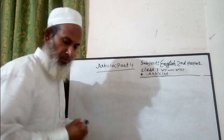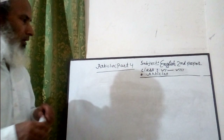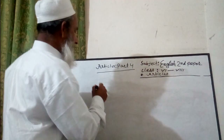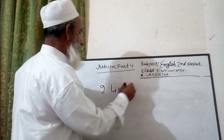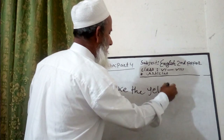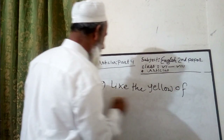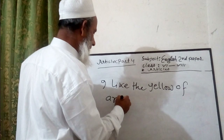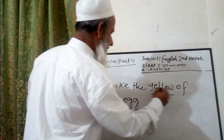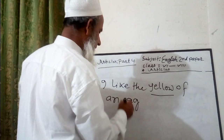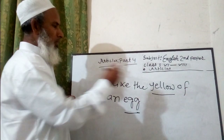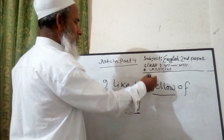We also use 'the' before an adjective that indicates a part of a thing. For example, the yolk of an egg — the yolk is a part of an egg. So before an adjective that indicates a part of a thing, we use 'the'.